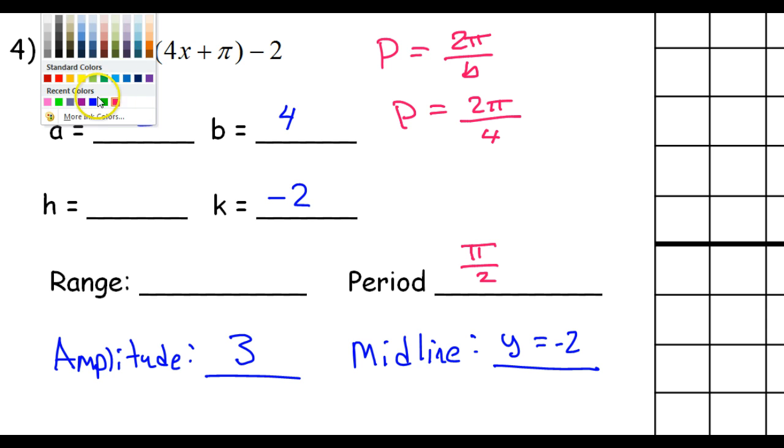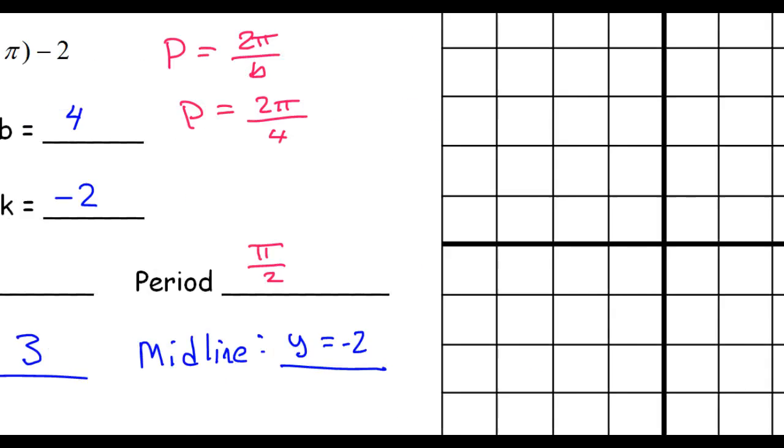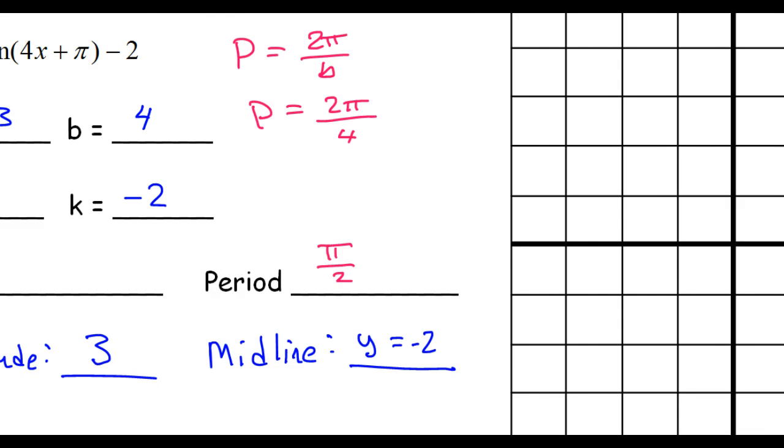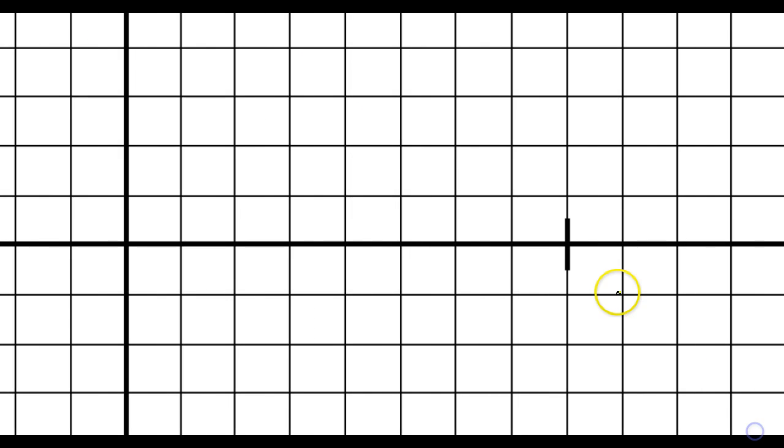Once you know your period, you can label your X axis. The period is π over 2. That means we're going to have to make this π over 2. If I go halfway, that's π over 4. If I go halfway before that, that's π over 8. If I go 3 of those, it'll get me to here. So, this will be 3π over 8. So, there's our X axis.